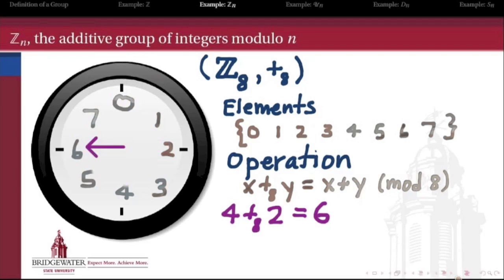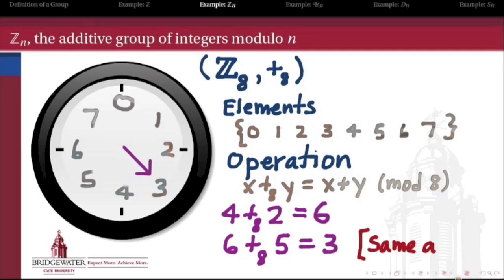Interesting things happen with 6 plus 5. Start at 6 o'clock and go 5 hours forward: 7, 0, 1, 2, 3. So 6 plus 5 equals 3, which is the same modulo 8 as 11, which would be the sum of 6 and 5 in the integers. We go around the clock, and once we get past 0, we start over.